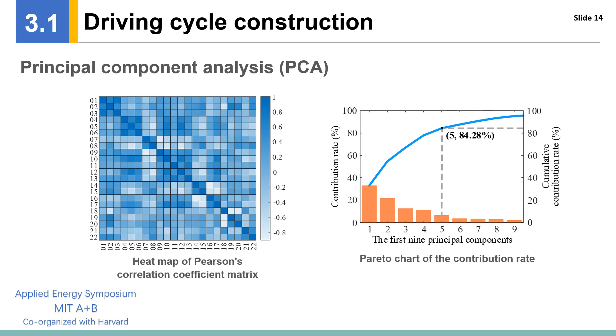After the calculation, the heat map of Pearson's correlation coefficient matrix can be obtained. It shows that all of the characteristic parameters are related to each other to a certain extent. So, it is necessary to adopt the principal component analysis, PCA, to fully reflect the original data information while reducing the computation cost.